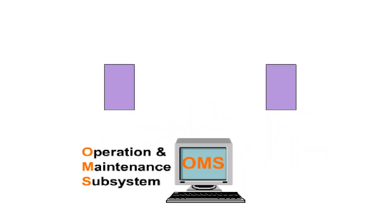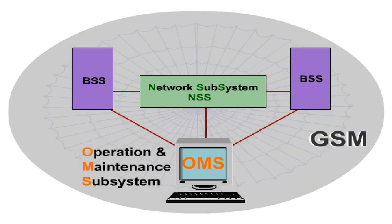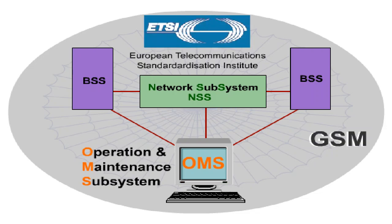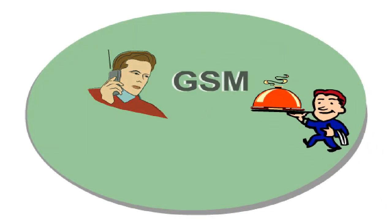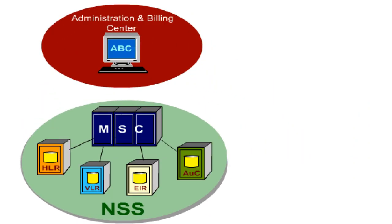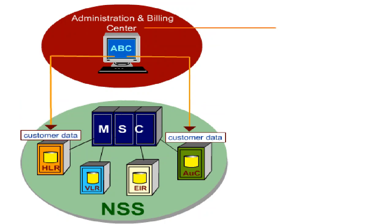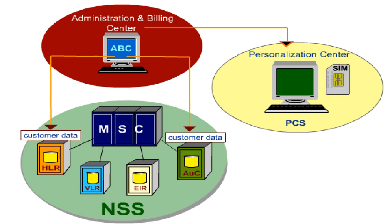The three subsystems — BSS, NSS, and OMS — are vital for the operation of a GSM network. The interfaces within and between the subsystems are mostly specified by the ETSI. For dealing with customer support and supplying certain services, GSM includes a number of additional components. The Administration and Billing Centre, ABC, transfers customer data to the appropriate registers of the NSS, into the AUC and the HLR. The Administration Centre is connected to the Personalisation Centre for SIM cards, PCS, via an interface. This makes it possible to disable the SIM card if necessary and protect it from abuse.